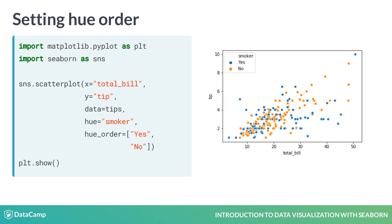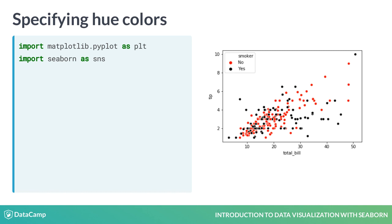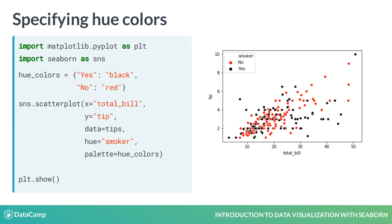You can also control the colors assigned to each value using the palette parameter. This parameter takes in a dictionary, which is a data structure that has key-value pairs. This dictionary should map the variable values to the colors you want to represent the value. Here we create a dictionary called hue_colors that maps the value yes to the color black and the value no to the color red. When we set hue equal to smoker and the palette parameter equal to this dictionary, we have a scatterplot where smokers are represented with black dots and non-smokers are represented with red dots.